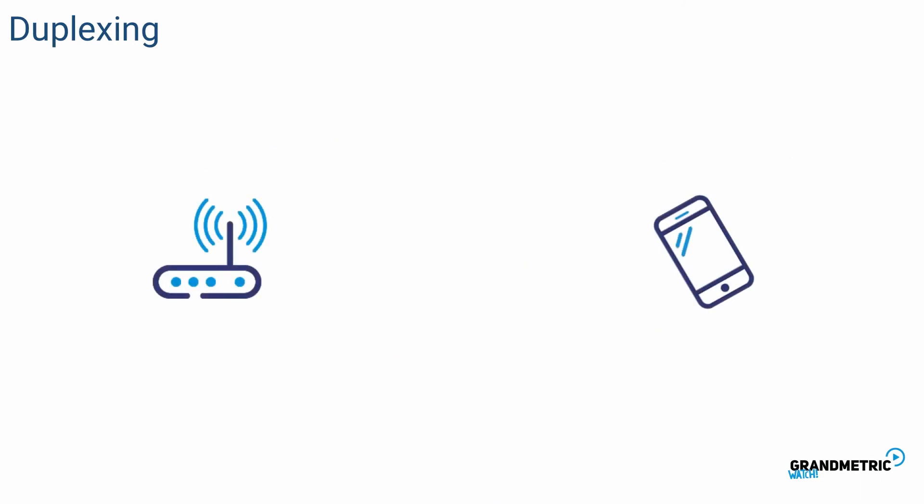So far we considered the device sending data to another one. But in real life this is quite rare case to send data only in one direction. In most cases we expect some answer. So devices must work in both directions. This is called duplexing.